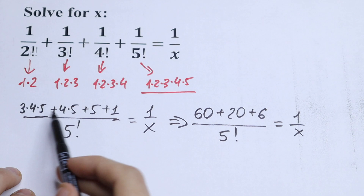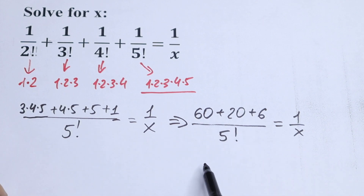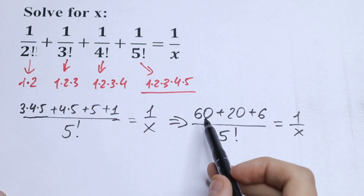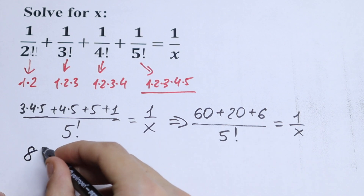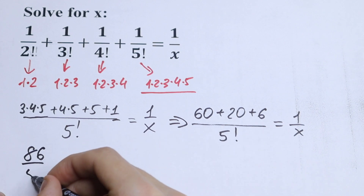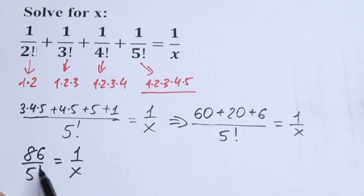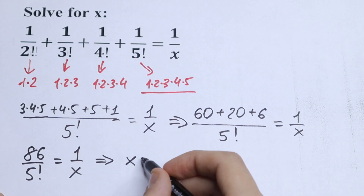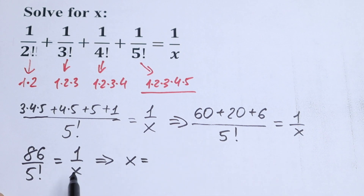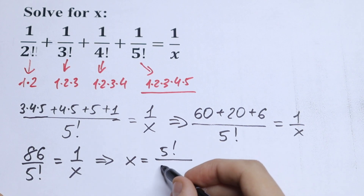Simplifying our numerator, we can add all of these and get the final equation: 86 over 5 factorial equals 1 over x. This is a classic case — a great moment to use cross-multiplying. As a result, x equals 5 factorial in the numerator, all over 86.